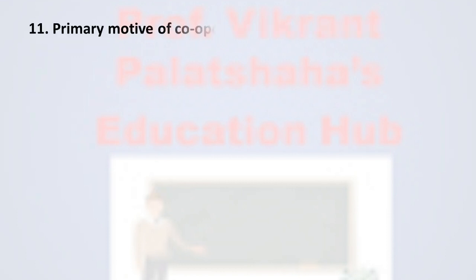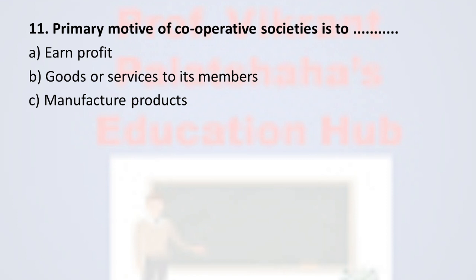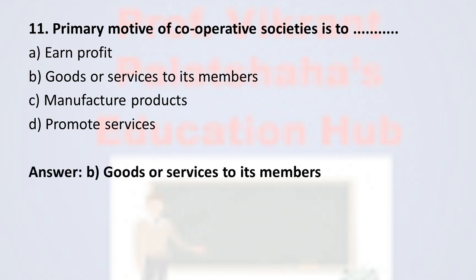Question number 11: The primary motive of cooperative societies is to ___. Option A: earn profit. Option B: provide goods or services to its members. Option C: manufacture products. Option D: promote services. The correct option is option B, goods or services to its members. The primary motive of every cooperative society is to provide goods or services to its members. Therefore, the correct option is option B.